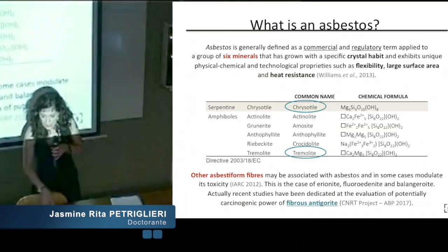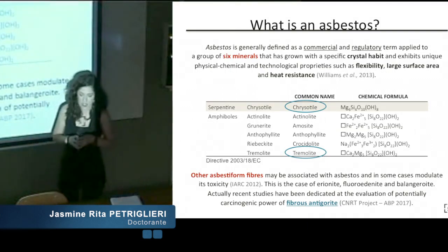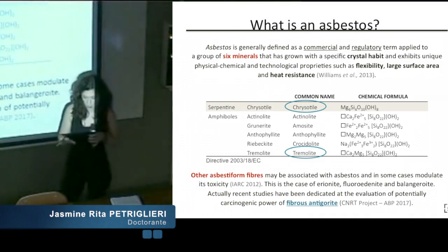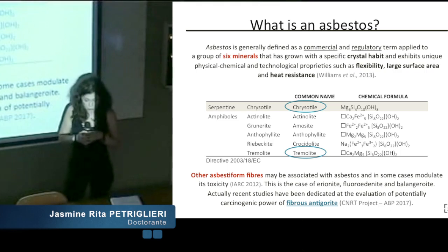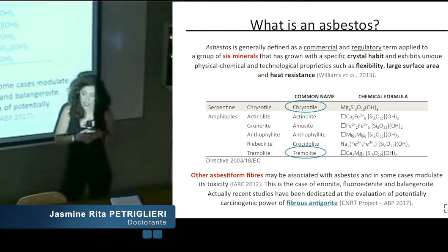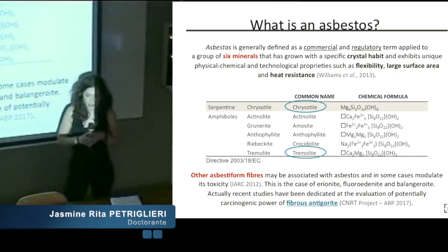What is asbestos? With the term asbestos we generally define a commercial and regulatory term that was applied to a group of six minerals: the serpentine chrysotyl, the amphiboles actinolite, amosite, anthophyllite, crocidolite and tremolite. These six minerals have specific crystal habits and several physical, chemical and technological properties.